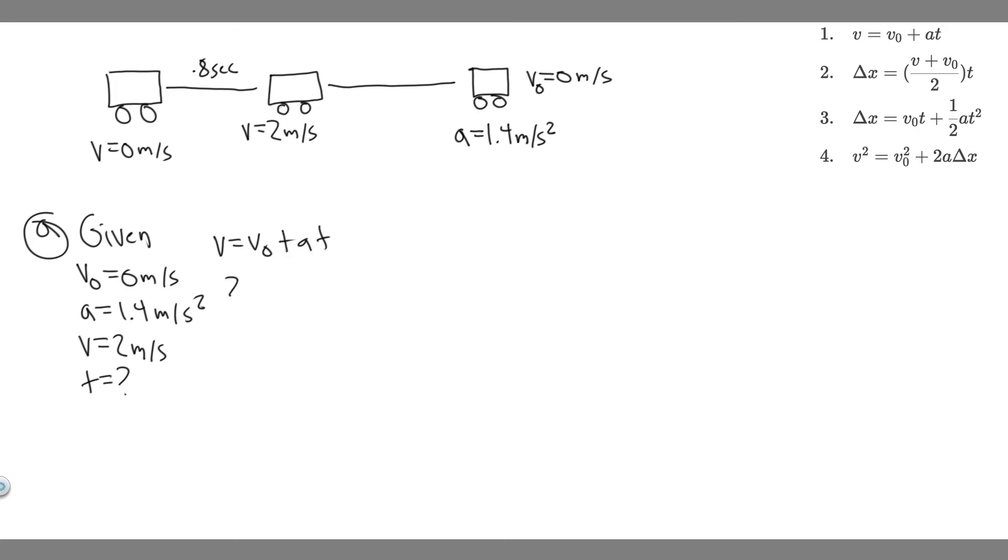So v is 2, which equals v sub 0, which is 0, plus a, which is 1.4, times t. So t is just going to be equal to 2 divided by 1.4. So you want to go ahead and do that. 2 divided by 1.4 is going to be 1.42. So t equals 1.428 and so on. You can just round to 1.4 seconds.